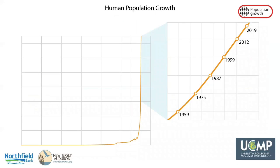For most of human history, our population size was relatively stable, but with innovation and industrialization, energy, food, water, and medical care became more available and reliable. Consequently, global human population rapidly increased and continues to do so, dramatically impacting global climate and ecosystems. We will need technological and social intervention to help us support the world's population as we adapt and mitigate climate and environmental changes.